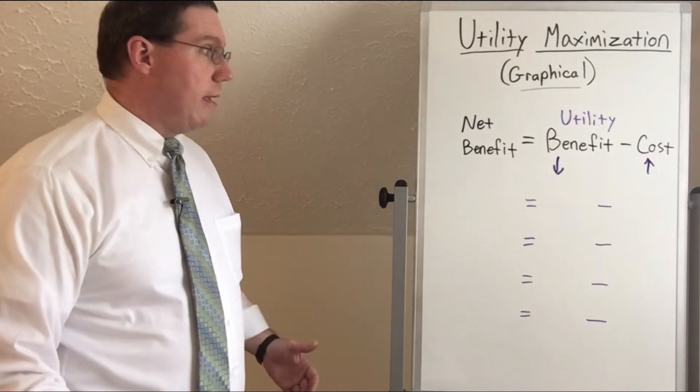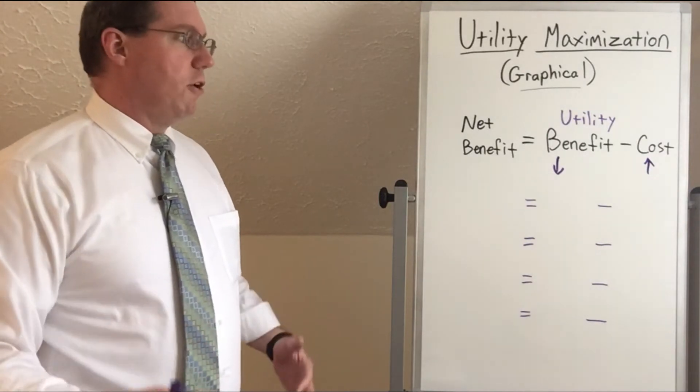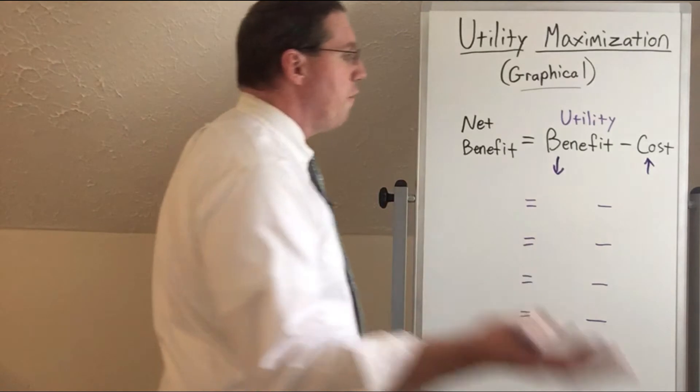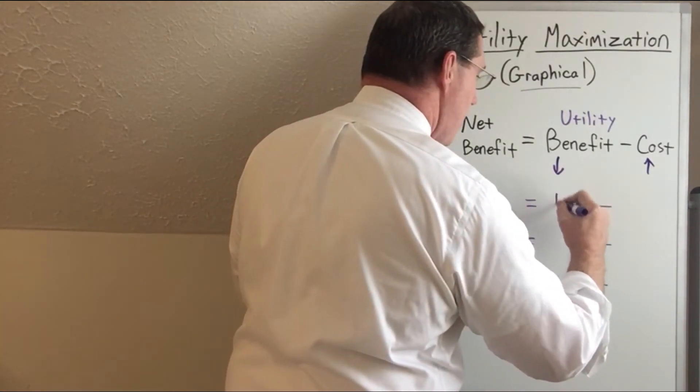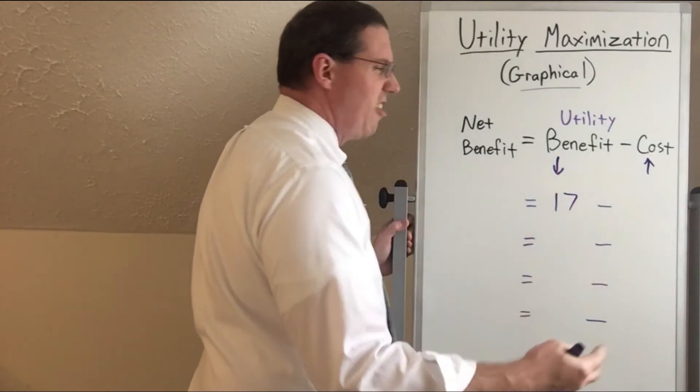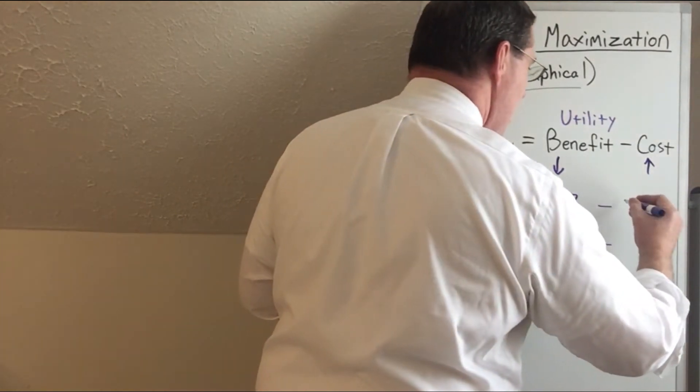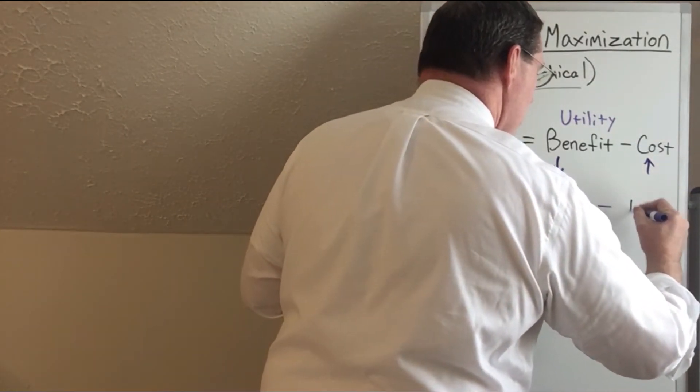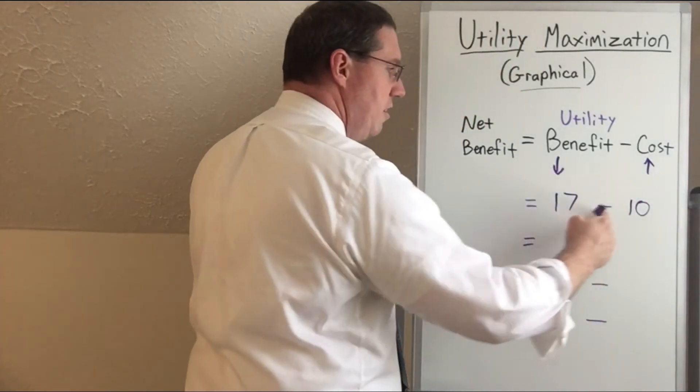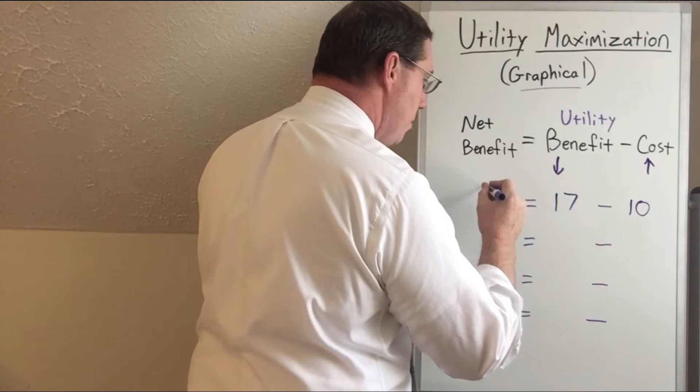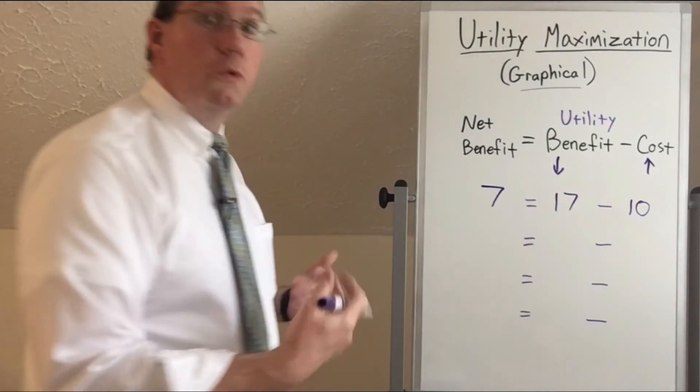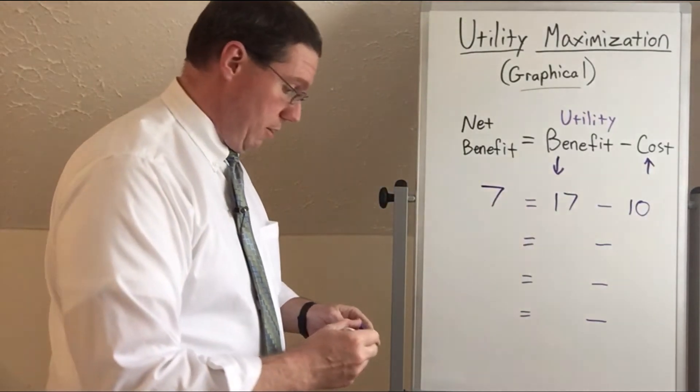Let's say that in some item you're going to consume, the first one, you're going to get, let's say, 17 benefit from it. And let's say the cost associated with getting it is 10. So 17 minus 10, the net benefit is going to be 7. So your overall utility that you're experiencing is 7.